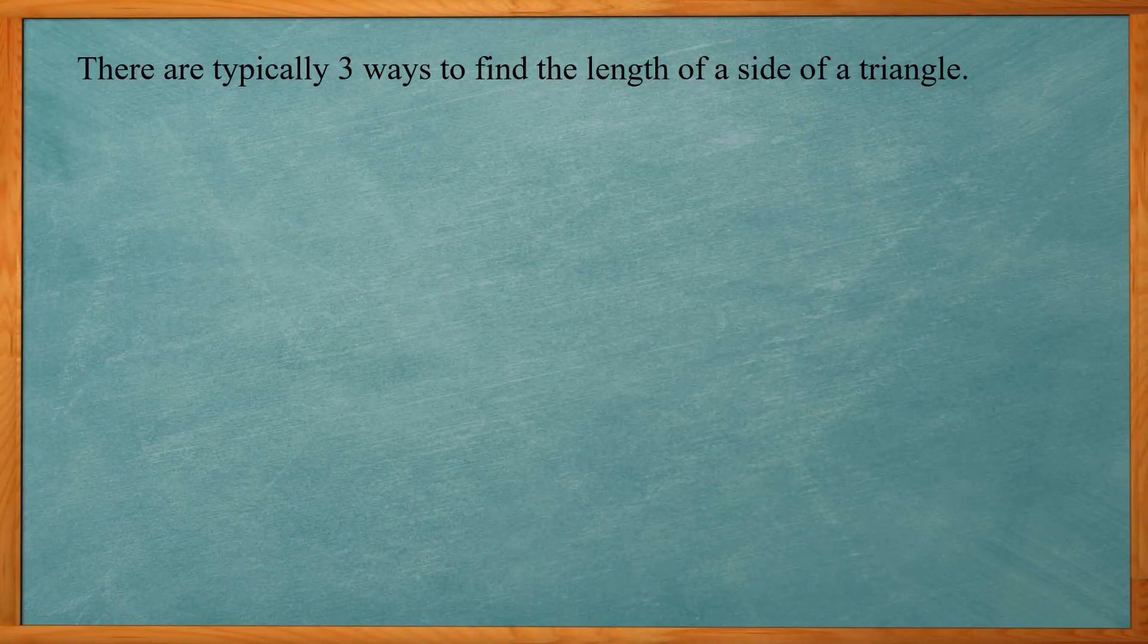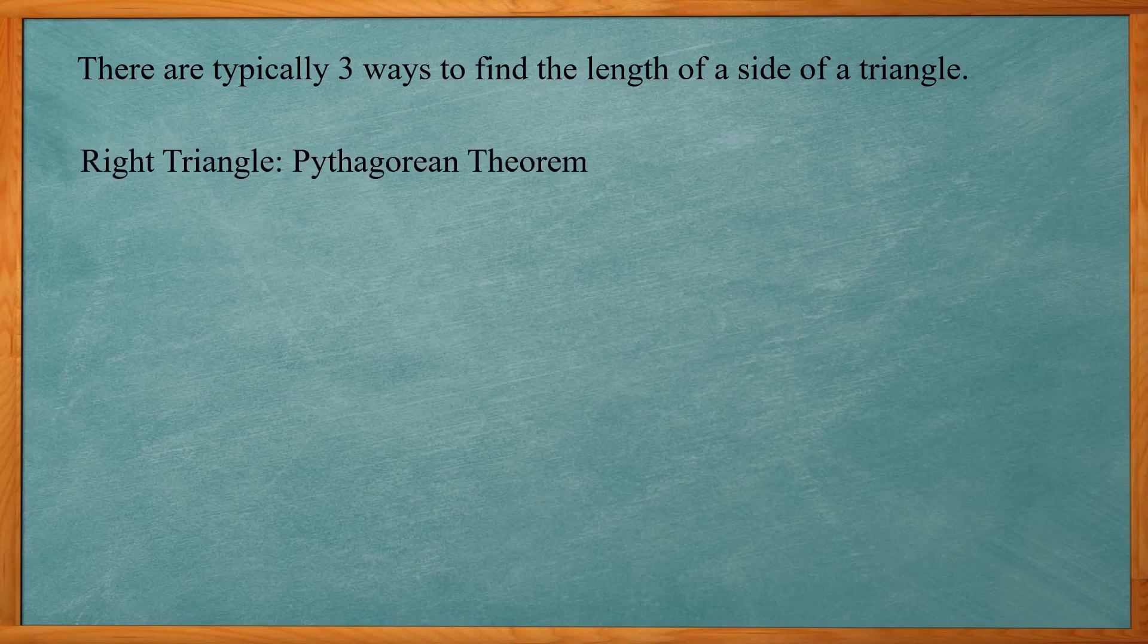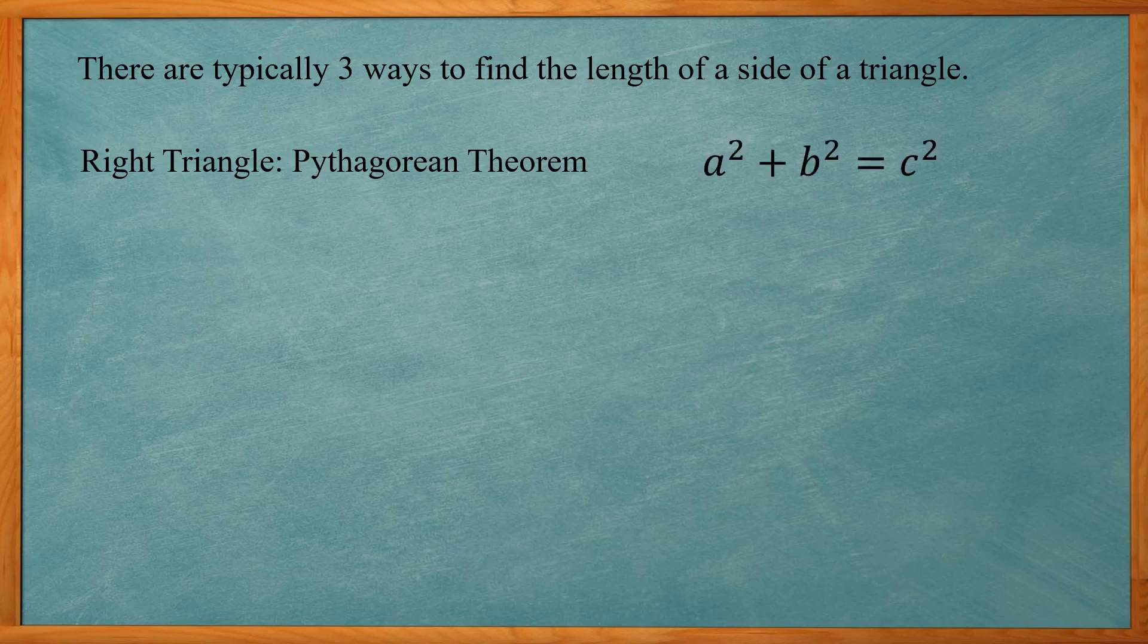Typically there are three ways to find the length of a side of a triangle. If you have a right triangle, you can use the Pythagorean Theorem, which states that a squared plus b squared equals c squared. This is for any right triangle, you can use that formula.